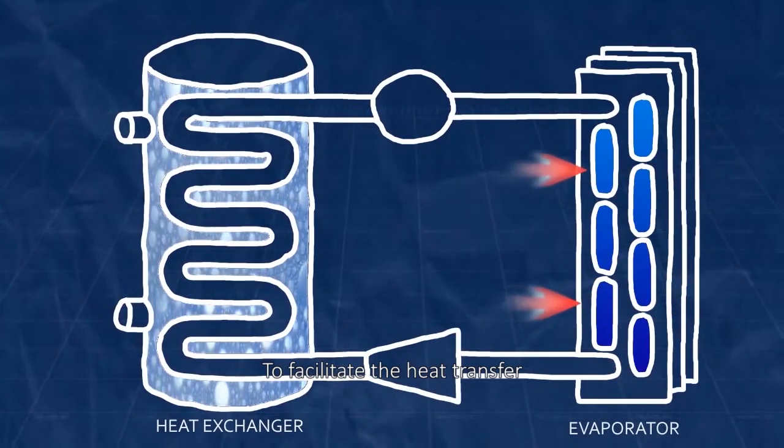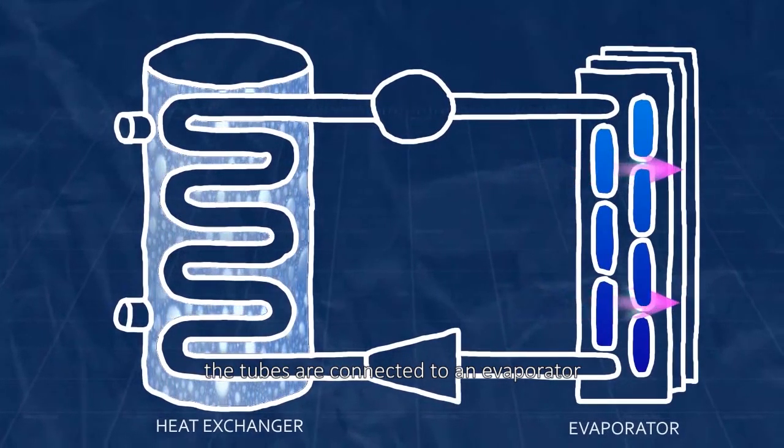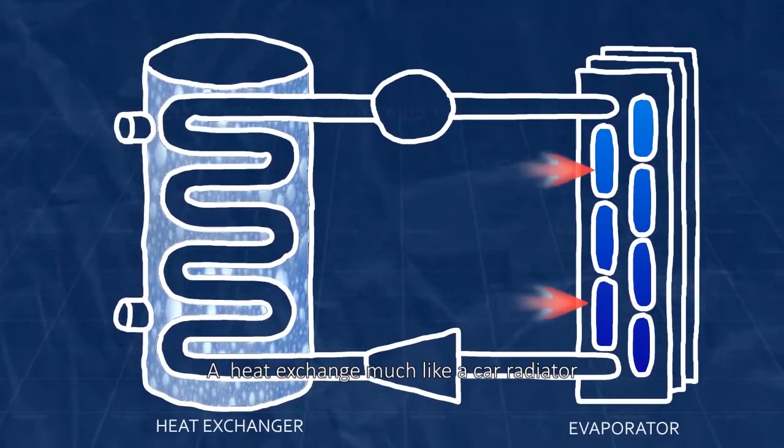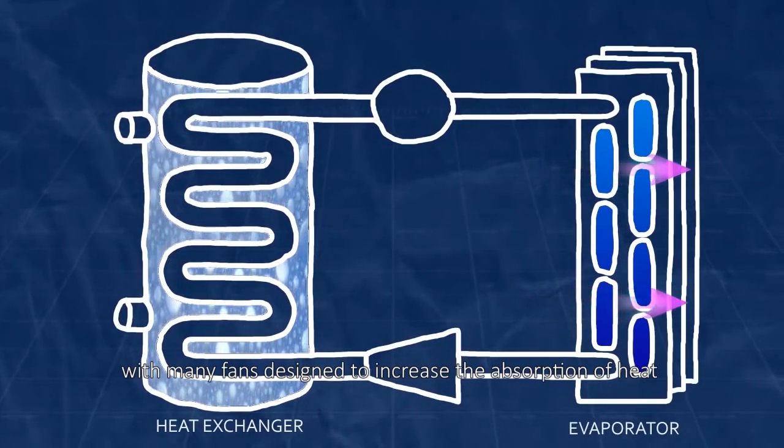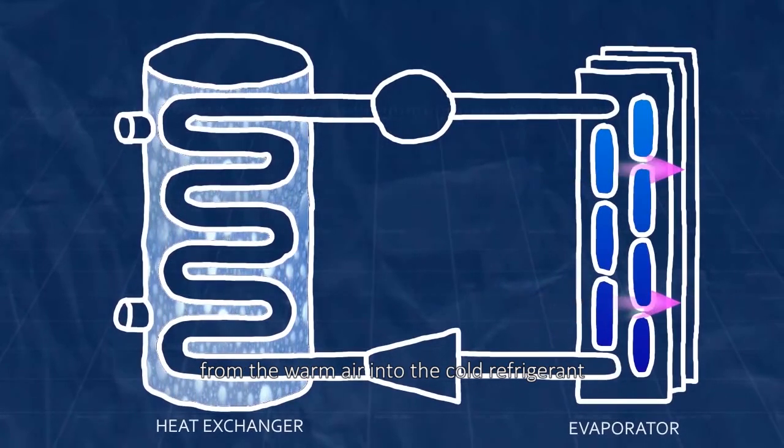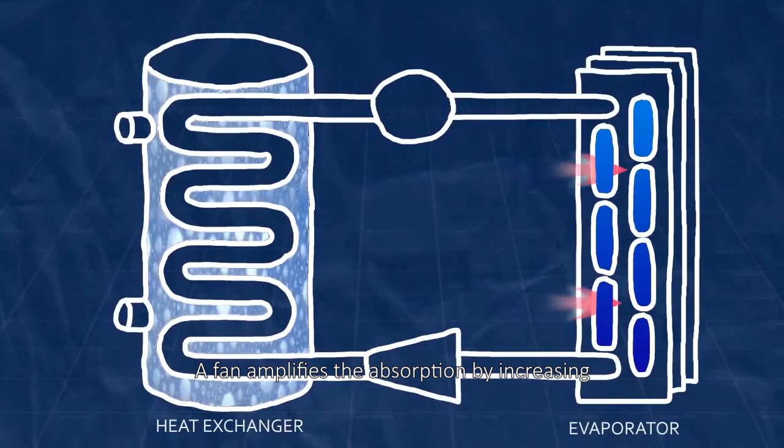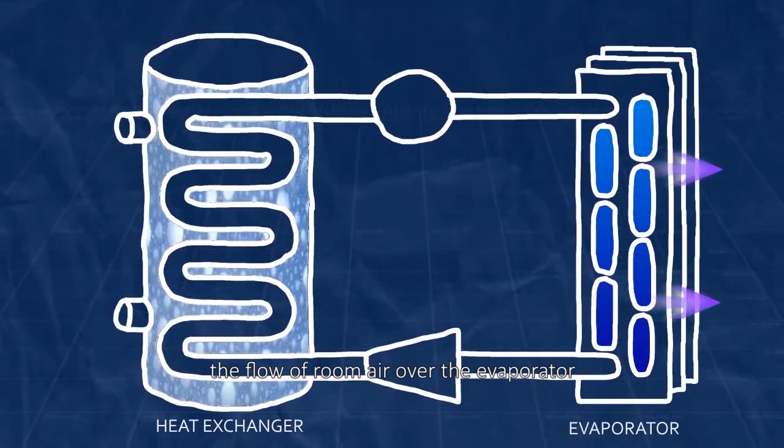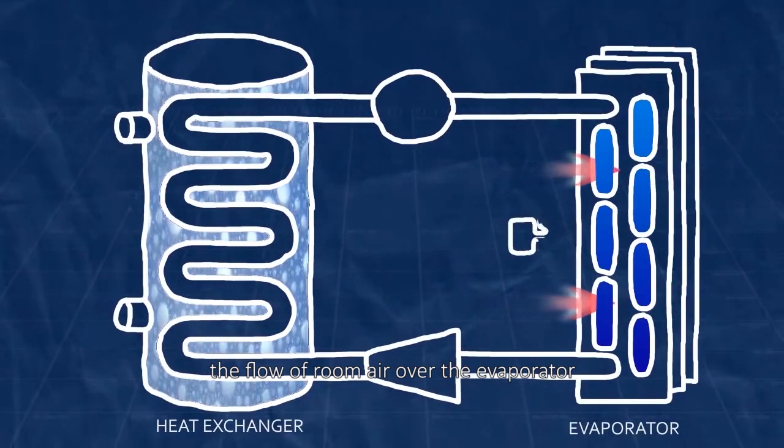To facilitate the heat transfer, the tubes are connected to an evaporator, a heat exchanger much like a car radiator, with many fins designed to increase the absorption of heat from the warm air into the cold refrigerant. A fan amplifies the absorption by increasing the flow of room air over the evaporator.